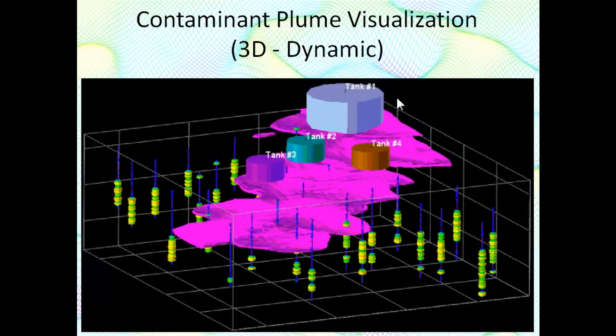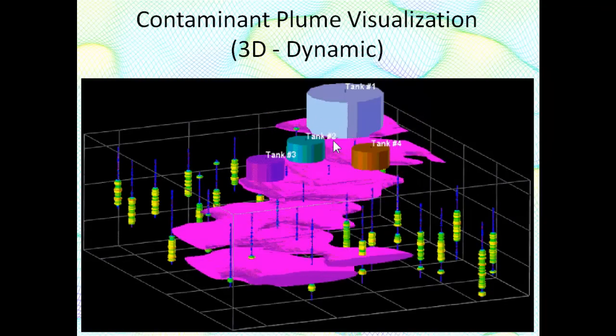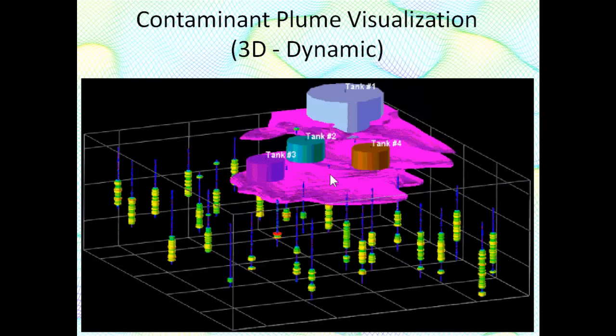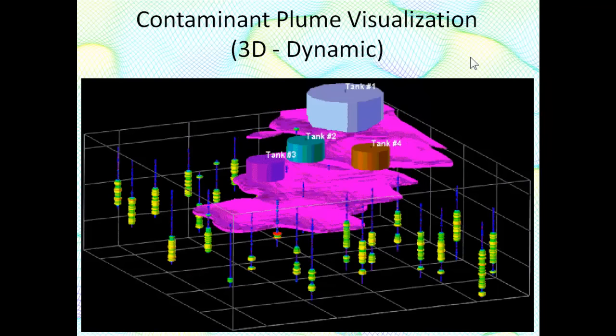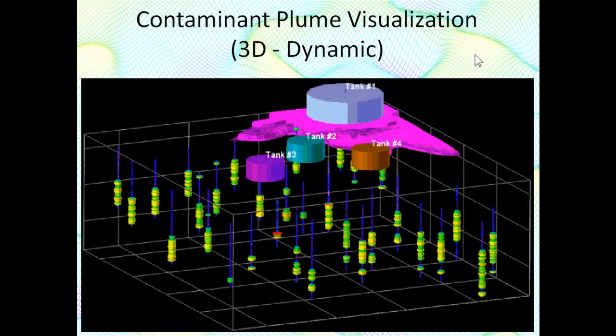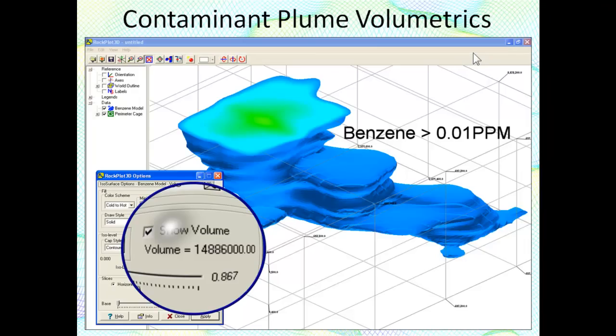A more useful technique for visualizing migrating or changing plumes requires that the user create separate models for each sampling interval. These models are then morphed into a dynamic diagram that can be saved as an AVI file for inclusion within PowerPoint or a website. When you are adjusting the ISO level value for a block model, notice the item labeled volume adjacent to the ISO level slider bar. This volume number will change as the ISO level is changed, thereby showing the volume of the contaminant plume. This volume number is expressed in cubic units for whatever units your original data was stored in.